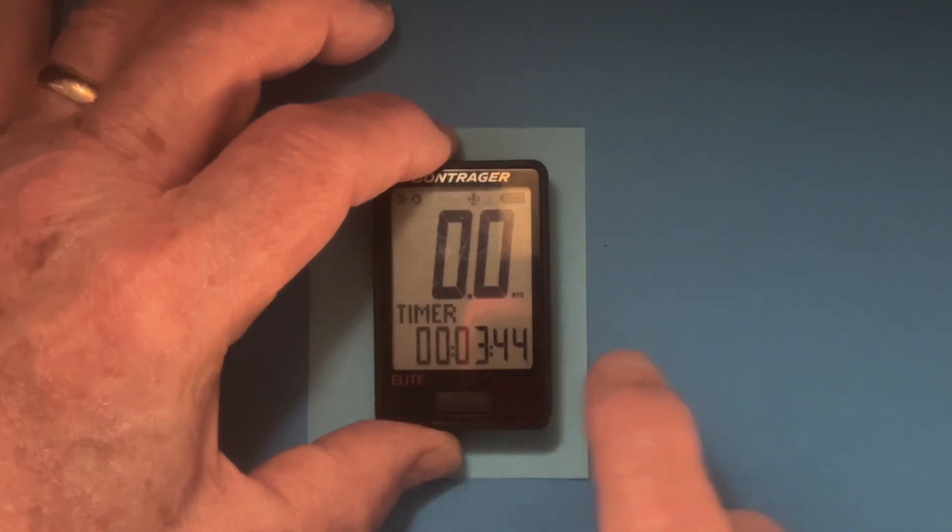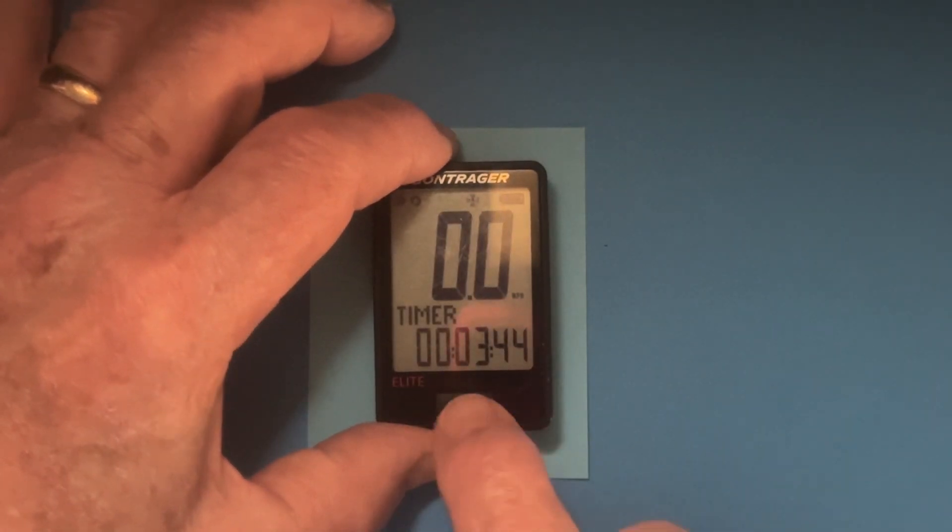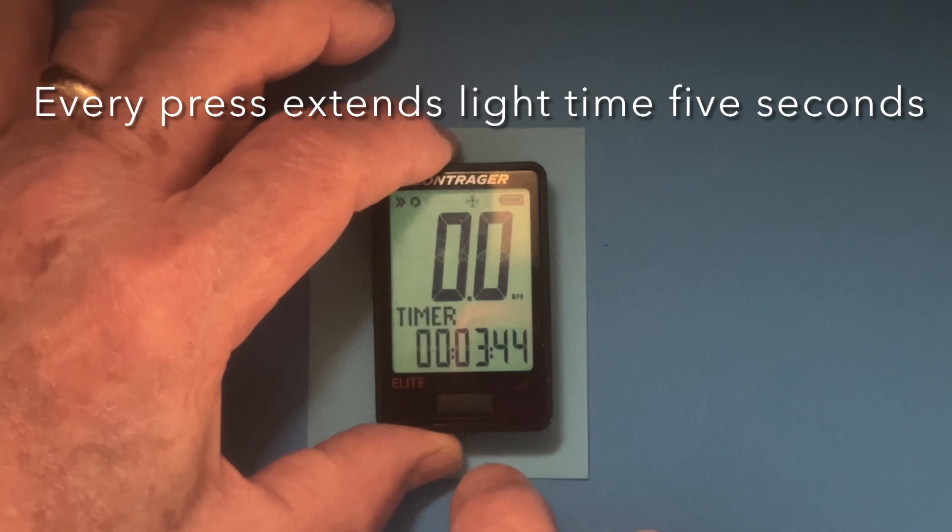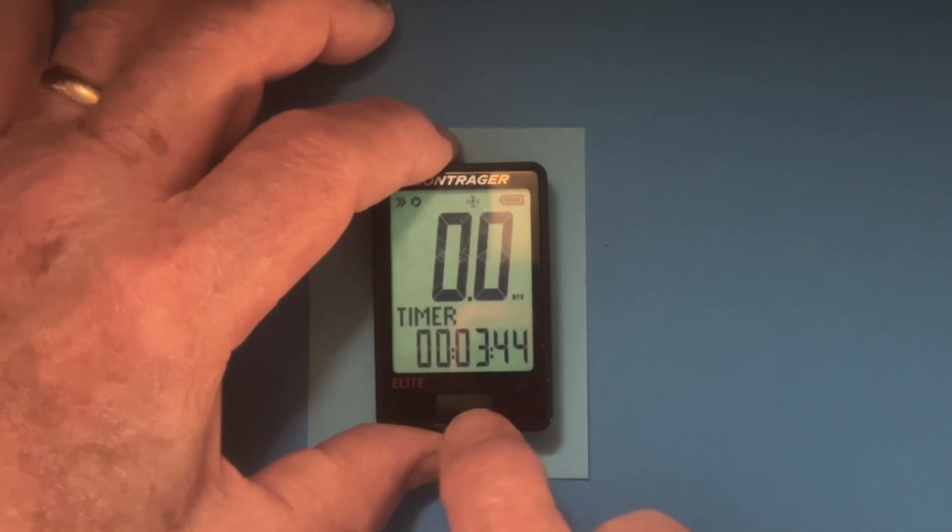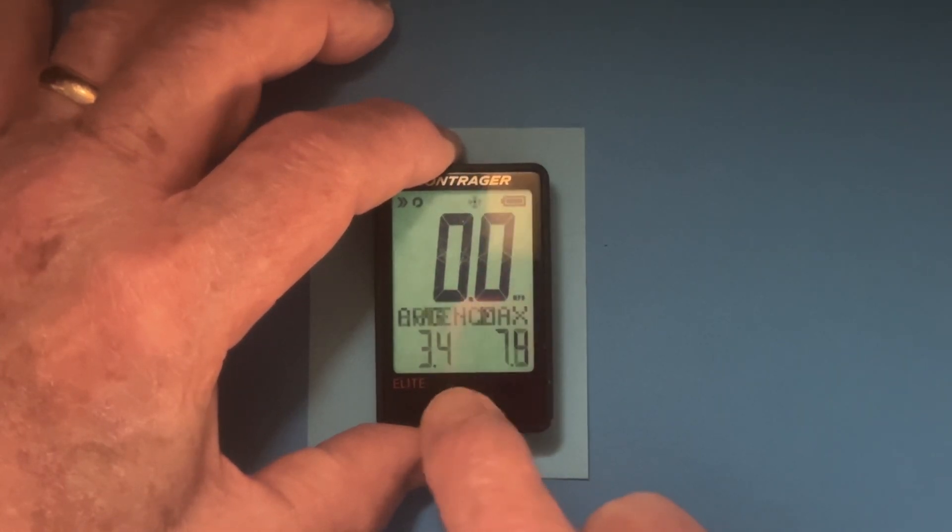If you want to view the data in the lower screen, what you do is you press the night mode button, the front button again. Then you can advance through the various lower screens.